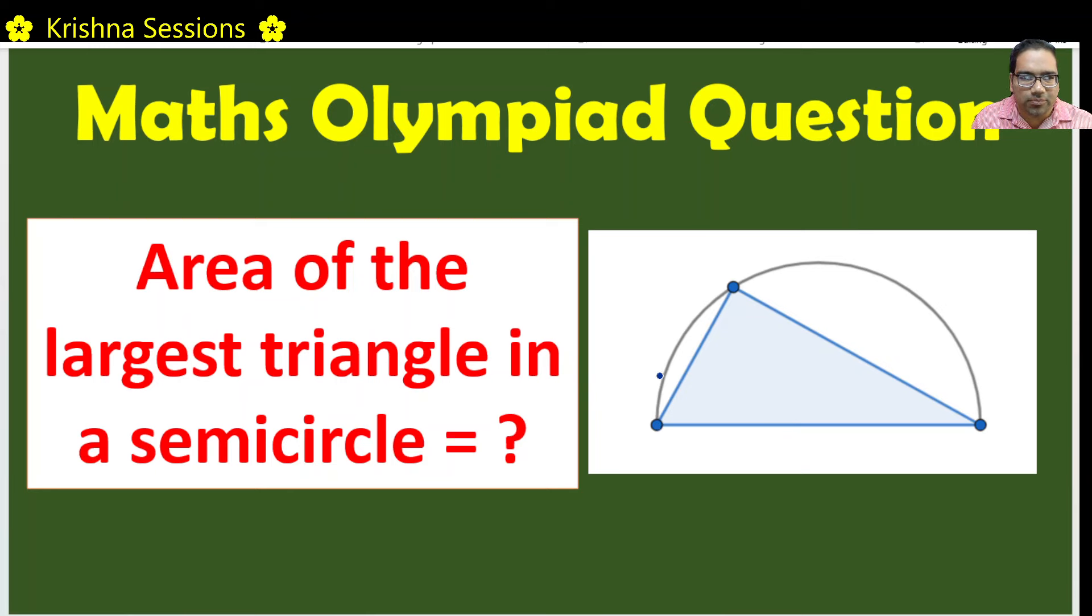Let us look at different options. Let us say triangle is like this, triangle is like this, or triangle is somewhere like this. If you notice, this triangle is smaller in area than this triangle. Then this triangle is actually smaller in area than this triangle.